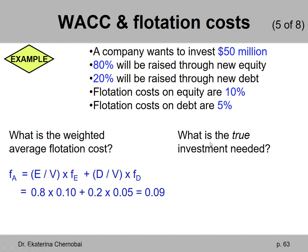Now let's answer the second question: What is the true investment that's needed? Using the formula from one of the earlier slides, we need to take $50 million — which is what the investment requires us to spend upfront — and divide it by 1 minus the weighted average flotation cost, 0.09. This gives $54.95 million.